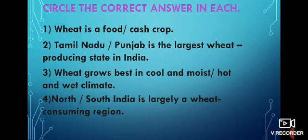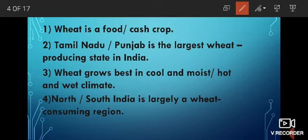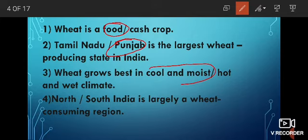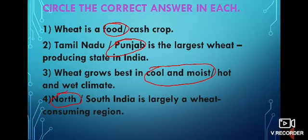Shall we do the answers now? Wheat is a food crop. Punjab is the largest wheat producing state. Wheat grows best in cool and moist climate. North India is largely a wheat consuming region. Now we completed. Shall we pass on to the lesson?